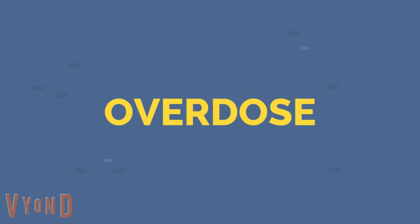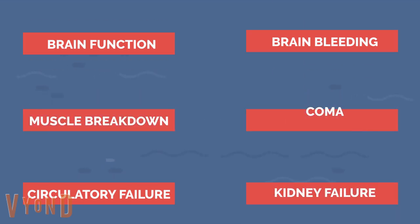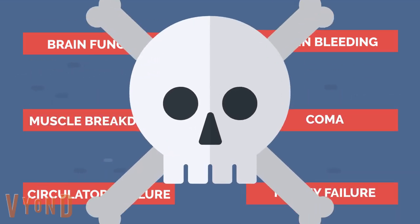Eventually, an overdose may occur because of this, which may result in a decline in brain function, brain bleeding, circulatory system failure, kidney failure, muscle breakdown, comas, or even death.